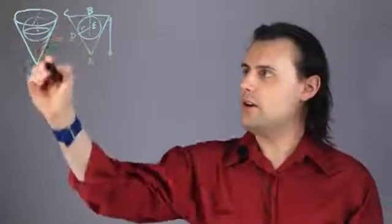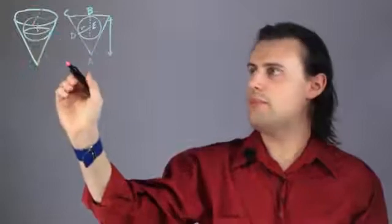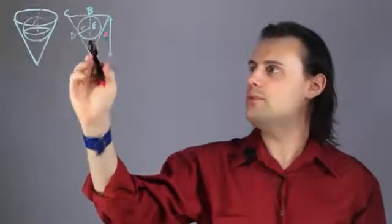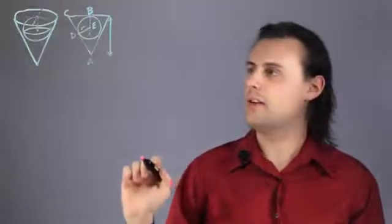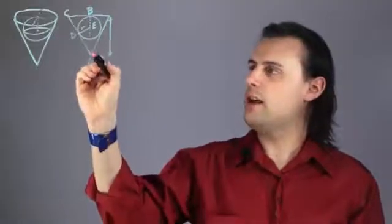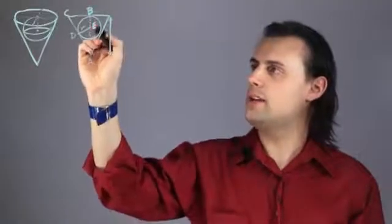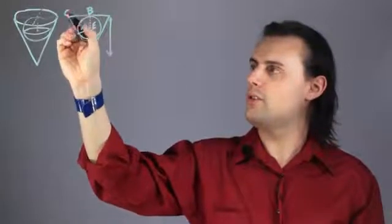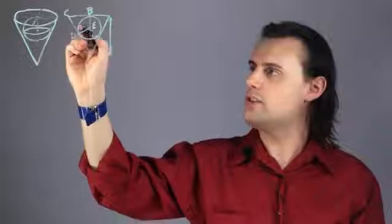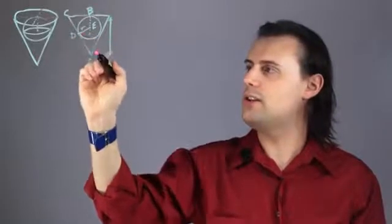So here I've drawn a cone and a sphere inside of it, and this is a side view. I'm denoting these respective points with letters. This is point A, the center of the sphere is point E, this top part is B, this corner is C, and the point at which the surface of the sphere and the side of the cone touch is D.